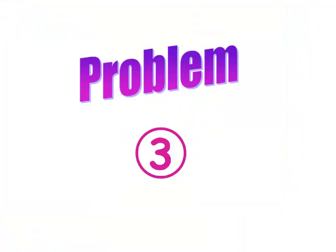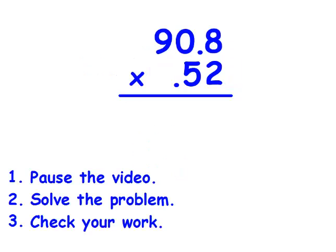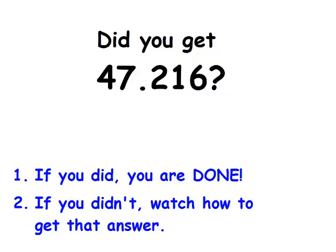Here's your last problem. Write this problem down. Pause the video; when you're finished, check your answer. If you're right, you're done. If you're wrong, watch me do it — and then you're done. Did you get 47 and 216 thousandths? If you did, you're done. If you didn't, watch me and we'll do it together.